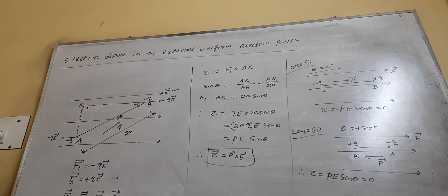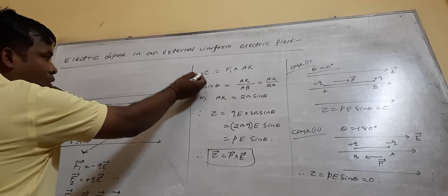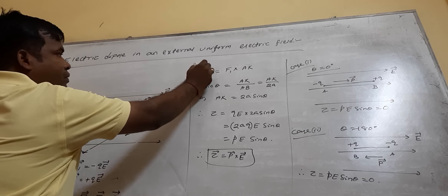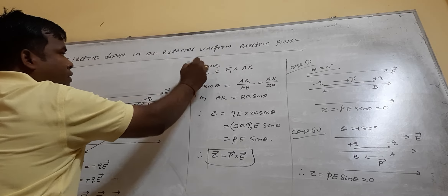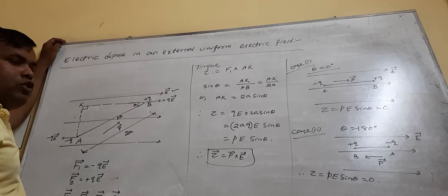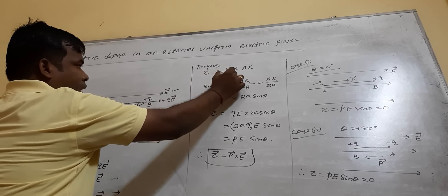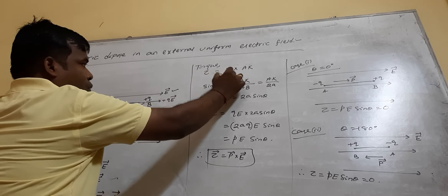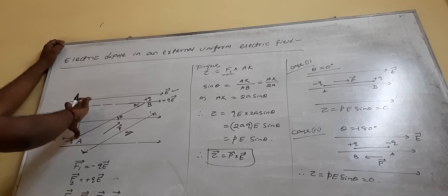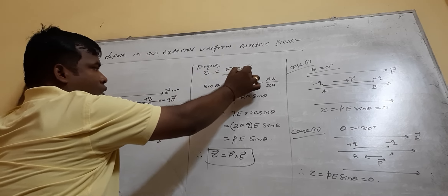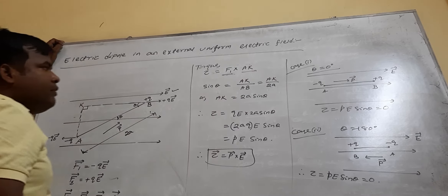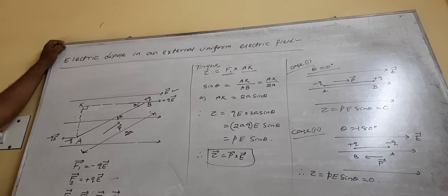Now, these two forces — plus QE and minus QE — are equal in magnitude, opposite in direction, and do not act along the same line. Their lines of action are different, so they form a couple. And you know, the moment of a couple is the torque. So what is the torque acting upon the dipole? The torque tau is the product of the magnitude of either force and the perpendicular distance between their lines of action.